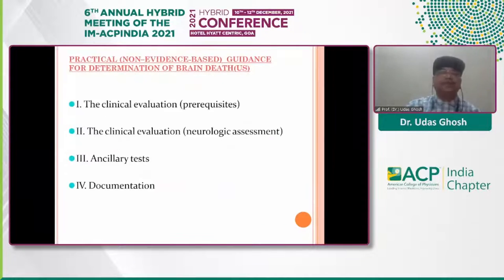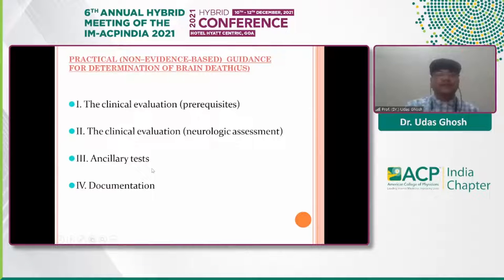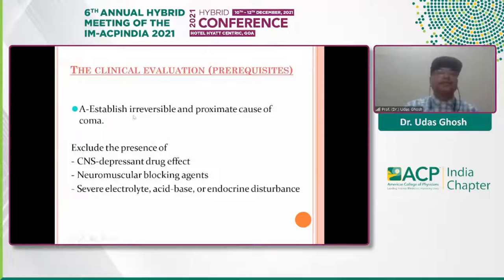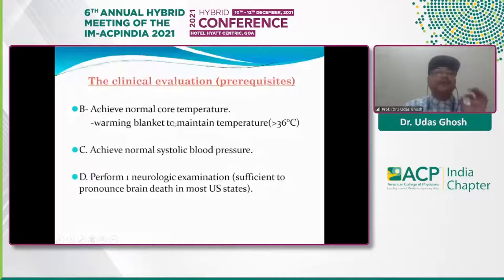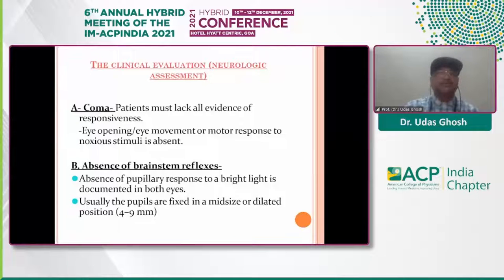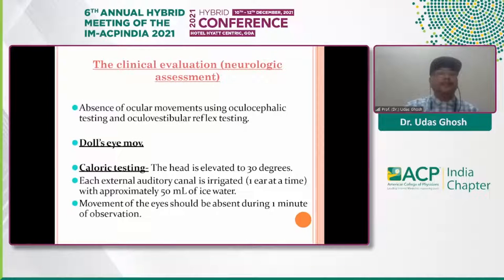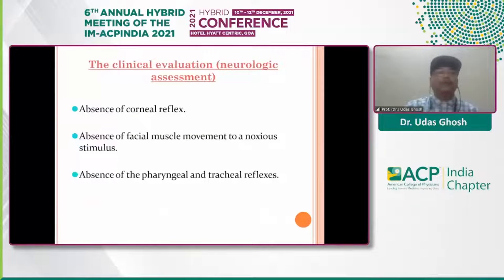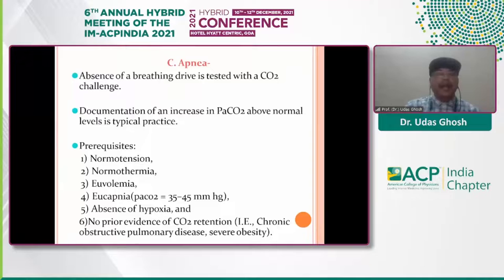For practical guidance for the determination of brain death as per USA: the steps are clinical evaluation, prerequisites, neurological assessment, ancillary tests, and documentation. Prerequisites include establishing an irreversible and approximate cause of coma, achieving normal core temperature, normal systolic blood pressure, and performing neurological assessment. Absence of brainstem reflexes is required: absent pupillary reflex with mid-size pupils, absence of ocular movement, caloric testing positive, absence of corneal reflex, absence of facial, pharyngeal, and tracheal reflexes, and a positive apnea test.